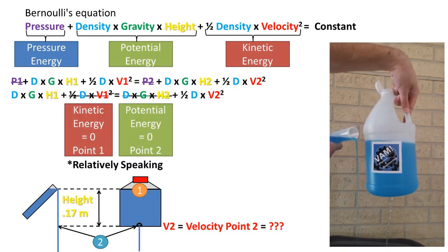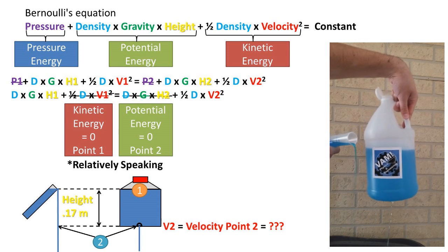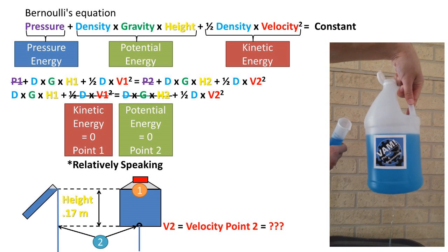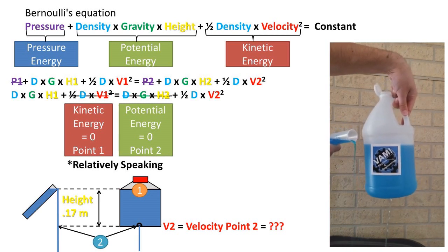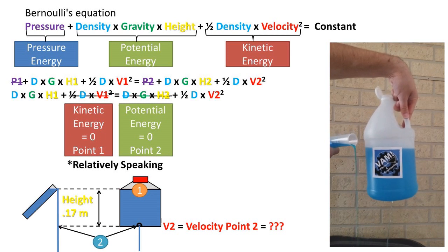Next, we assume at point 1 there is not much movement of the water, so relatively speaking, there is no kinetic energy, so kinetic energy equals zero. At point 2, we will be setting the height at zero, which makes the potential energy at point 2 zero, relatively speaking.